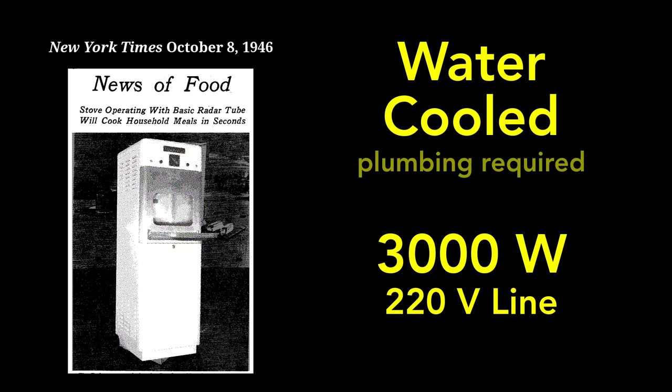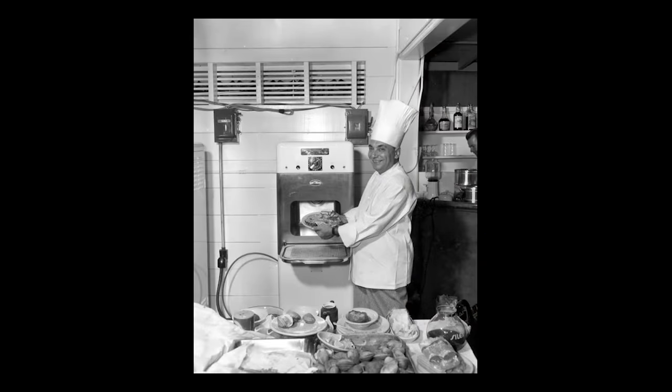The high power was a design choice of the engineers. They wanted the ovens to cook quickly because they marketed the ovens to chefs and restaurant owners as a way to reduce the time restaurants spent preparing meals.